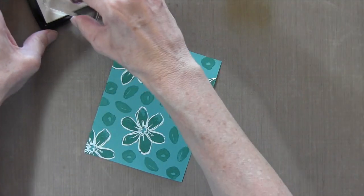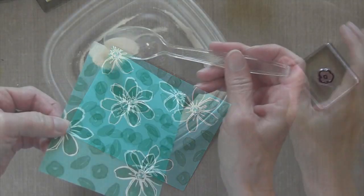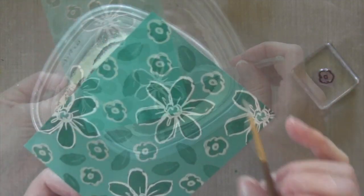You could also do this with a stamp set that has just outlines, and color inside with a marker, a matching marker, instead of stamping a solid stamp.